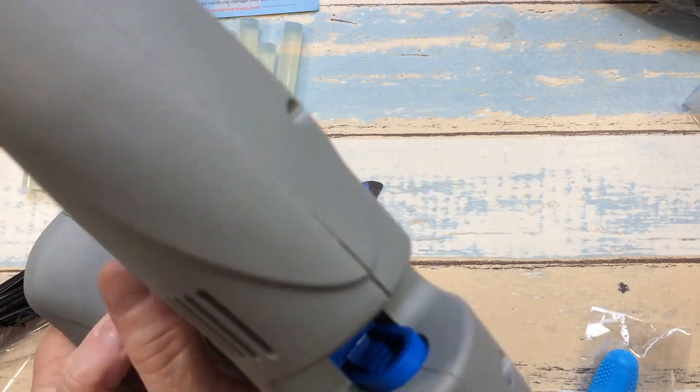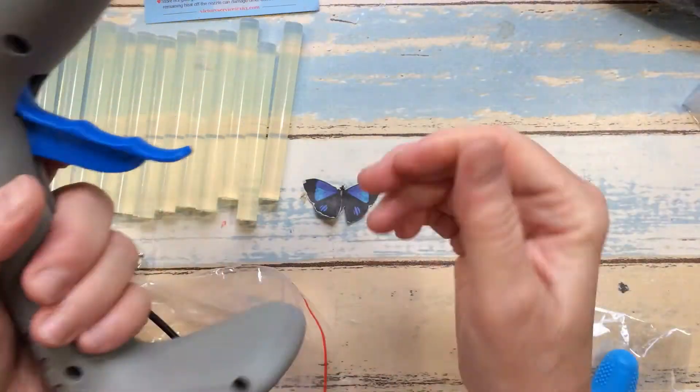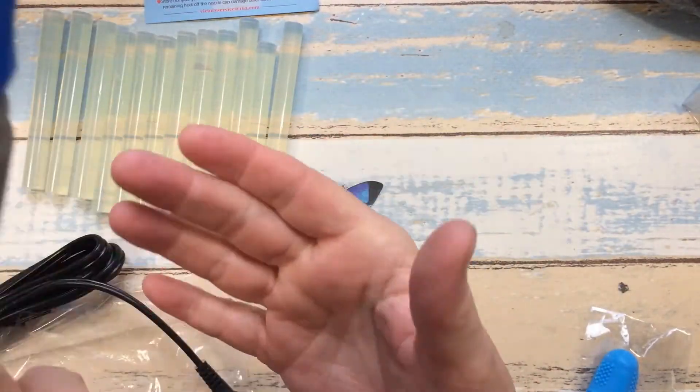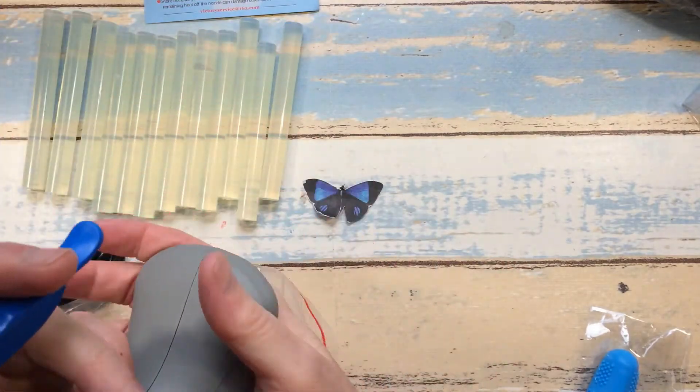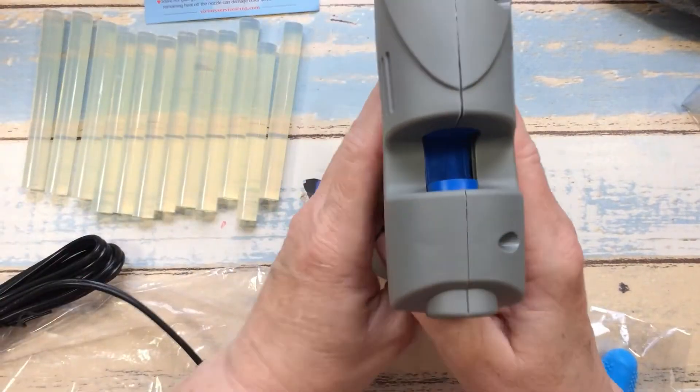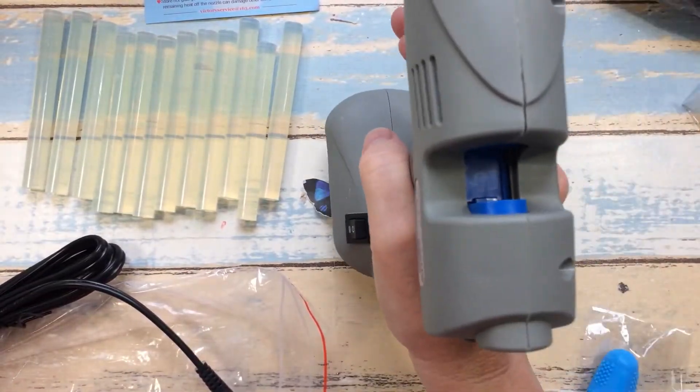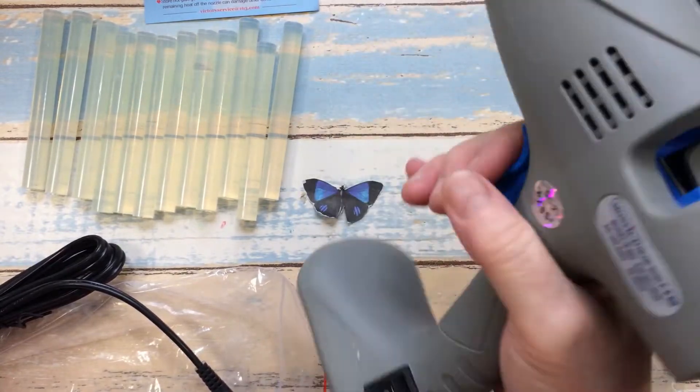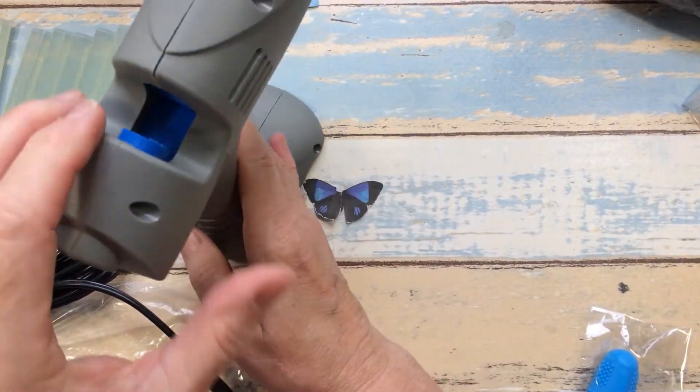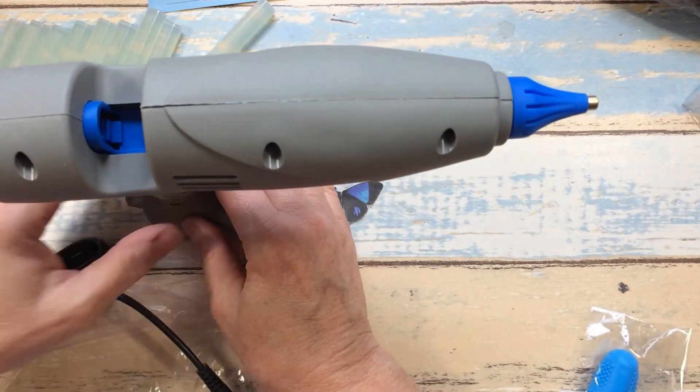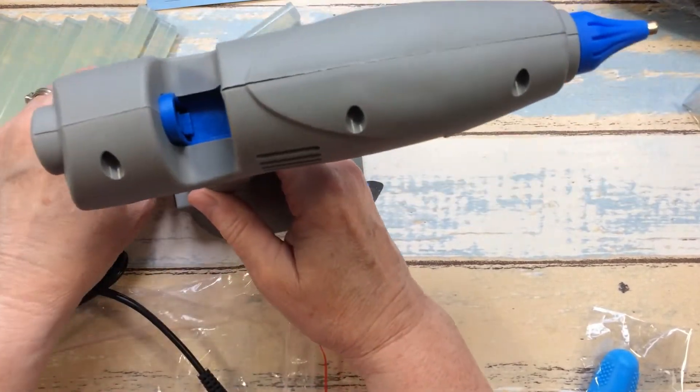For the size of this glue gun, it's not heavy at all. I don't even think it's a pound. It's a nice weight and it won't make your arm tired. I know some glue guns can be rather weighty. But anyway, that is what came with this glue gun.